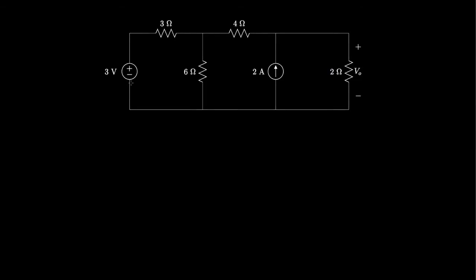Let's look at an electric circuit that has a 3-volt voltage source, a 2-amp current source, and 4 resistors. What we'd like to find is the voltage across the 2-ohm resistor. There are a variety of methods we might apply: we could label the nodes and write node voltage equations to solve for the node voltages, or we could write loop equations and solve for the currents. Both of those methods would work, and I encourage you to try both and verify you get the same answer.